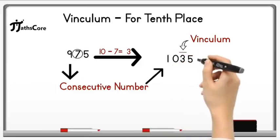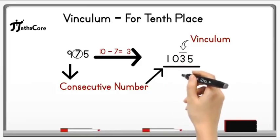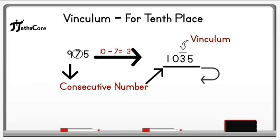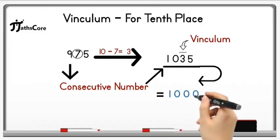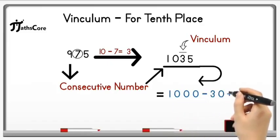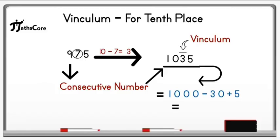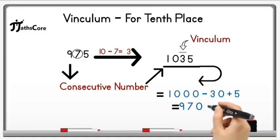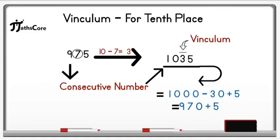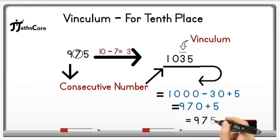The meaning of this number is: subtract the tens place digit 3 from the thousands place digit 1 and add the unit place digit 5. The place value of 1 is 1000 minus the tens place digit 3, which is 30, plus 5. So 1000 minus 30 is 970, and 970 plus 5 equals 975, which is the given number. In this way you can solve this kind of examples.